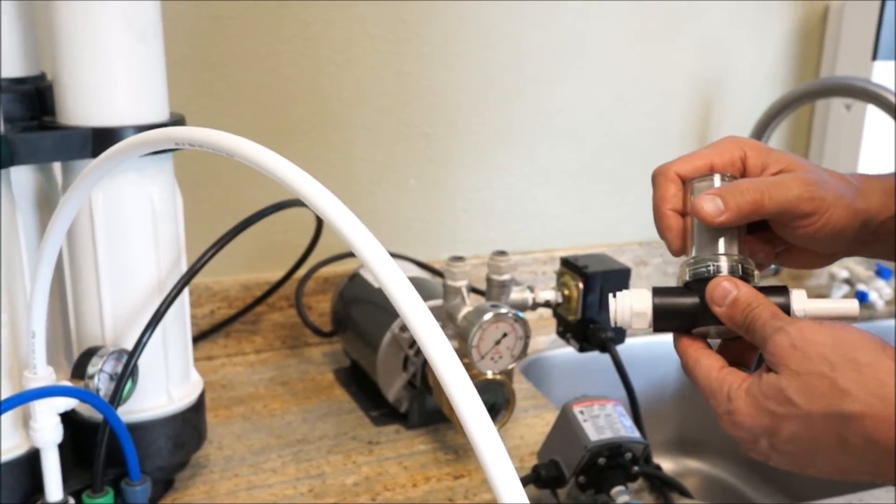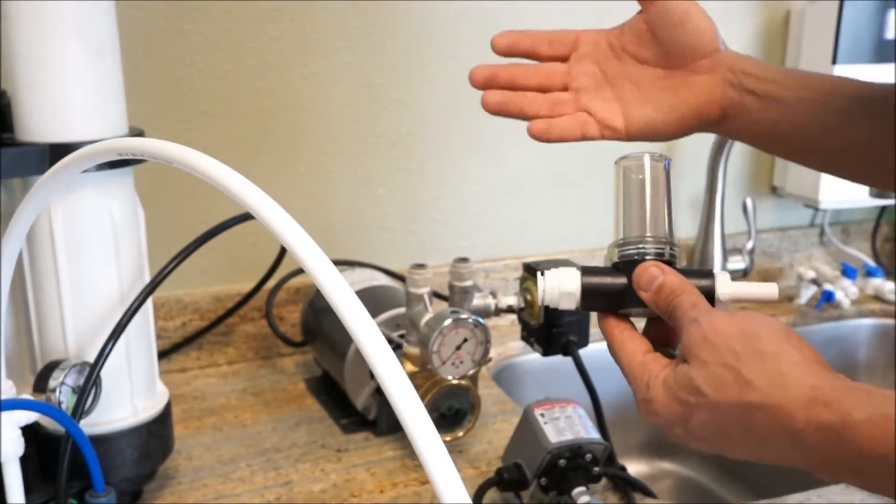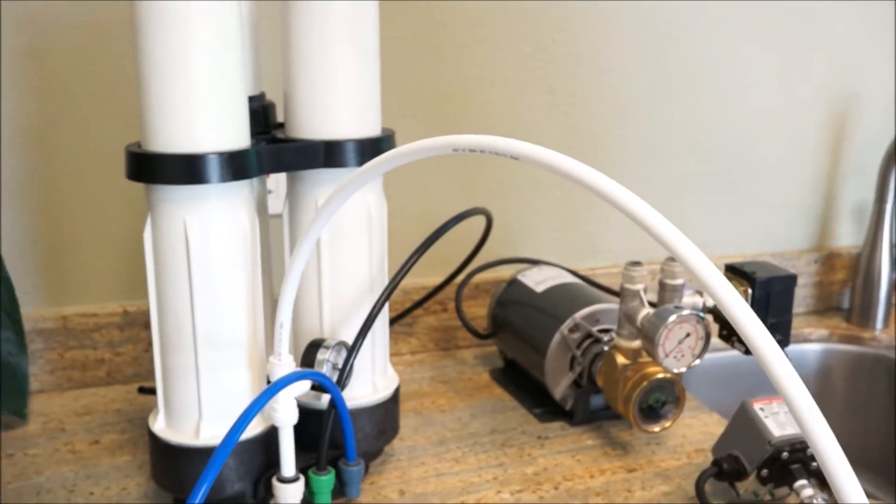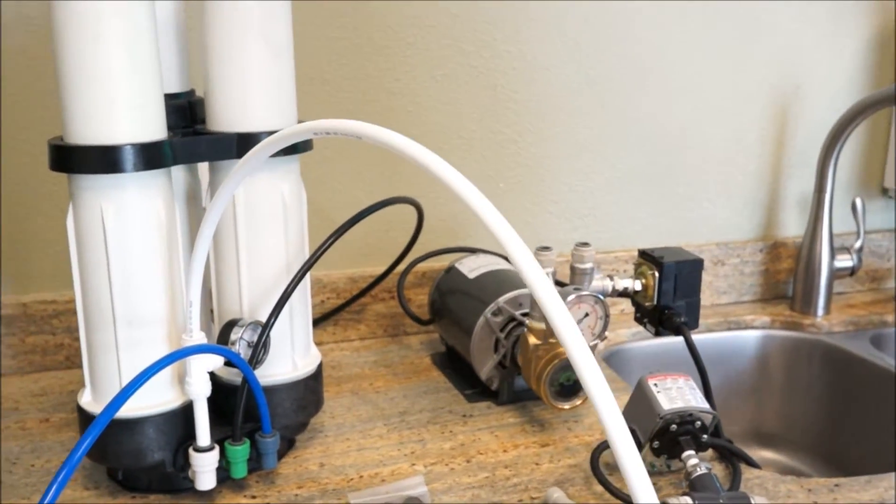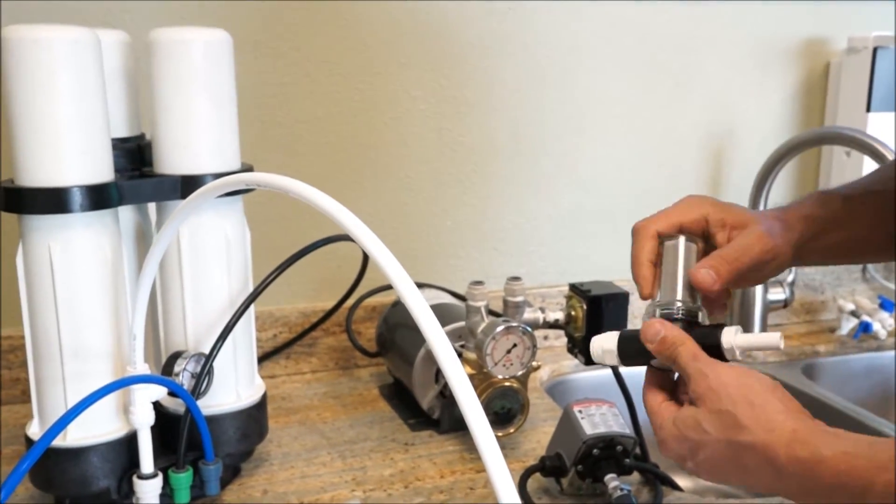If you're using a pre-filter like the pre-evolution that would come before this, so it would be in between your feed water, your tap water, and the pump protector. That's where your pre-filter would go.